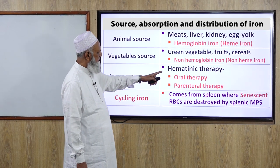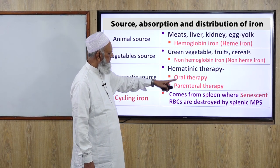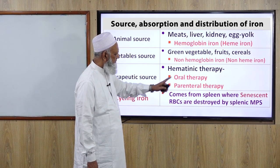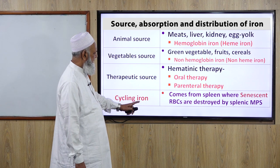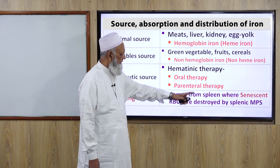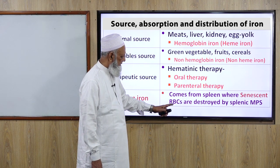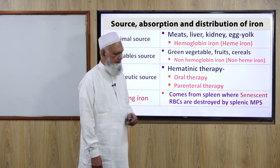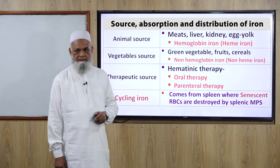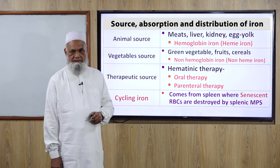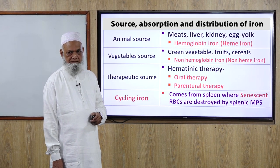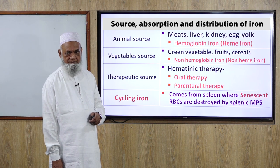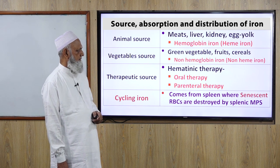Therapeutic source involves hematinic therapy — oral and parenteral therapy. Cycling iron comes from the spleen where senescent RBCs are destroyed in the splenic mononuclear phagocytic system, specifically the cells of the mononuclear phagocytic system.